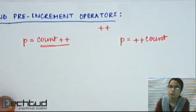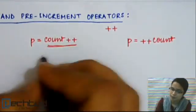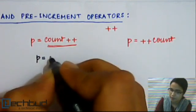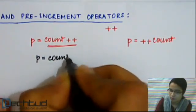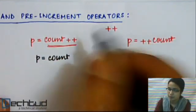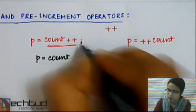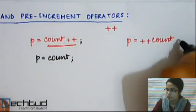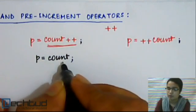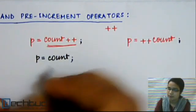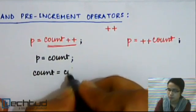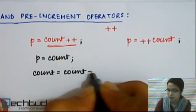For the POST-increment operator, first the value of COUNT will be assigned to your variable P. I forgot to write the semicolon. Here also there will be a semicolon. The value of COUNT will be assigned to P, and then its value will be incremented by one.